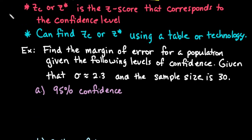Let's look at an example. We're going to find the margin of error for a population given the following levels of confidence. We're given that sigma equals 2.3 and the sample size is 30.